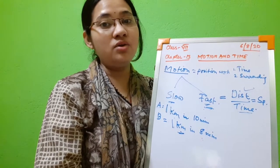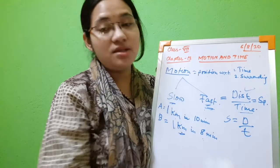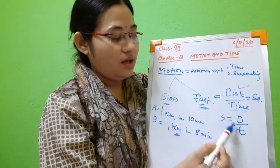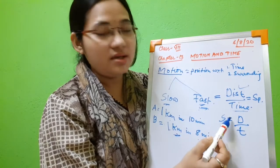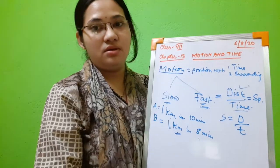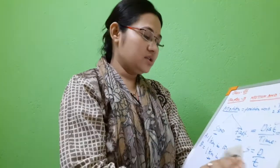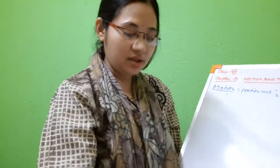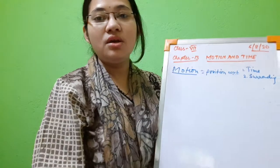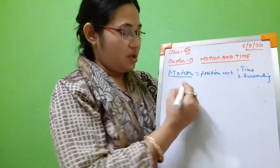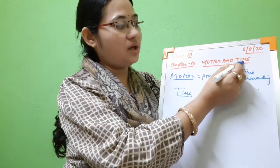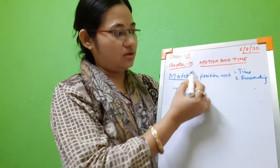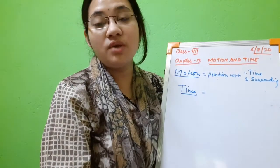Please remember: speed is equal to distance divided by time. Distance is equal to speed multiplied by time. And time is equal to distance divided by speed. These are the key equations for studying motion and time. Now let us look at how to measure time — what are the ways ancient people used to measure time?